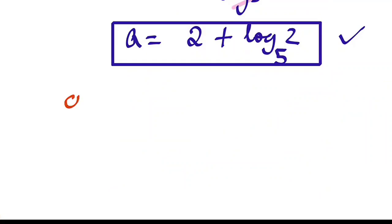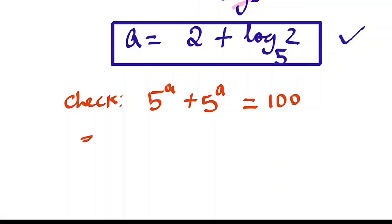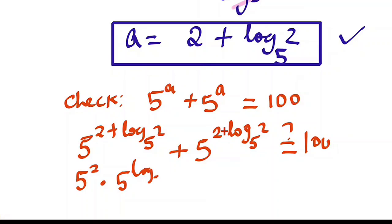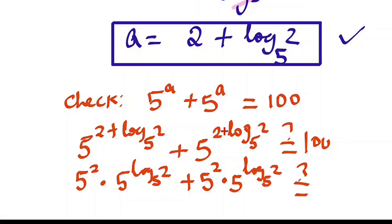Let's check. We are given 5 to the power of a plus 5 to the power of a equals 100. So substituting a equals 2 plus log base 5 of 2, we have 5 to the power of 2 plus log base 5 of 2, plus 5 to the power of 2 plus log base 5 of 2. Is this going to give us 100?